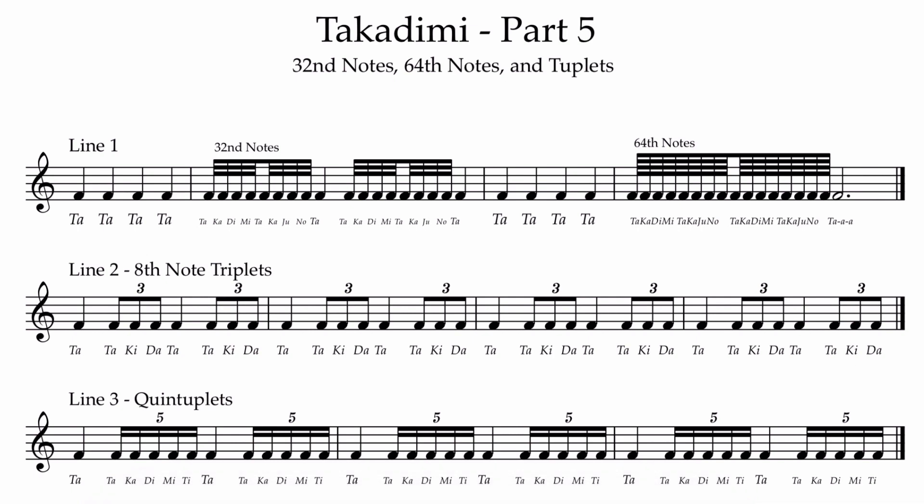To say 32nd notes: all these notes grouped together are said within one beat, and what you're going to say is 'takadimi takajuno.' Takadimi takajuno. Takadimi takajuno ta. That's all there is to it. A lot easier to say than to sometimes play it, but that's what you'll say. Takadimi takajuno ta.